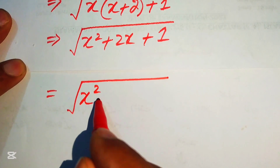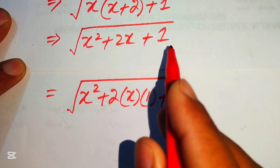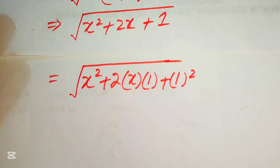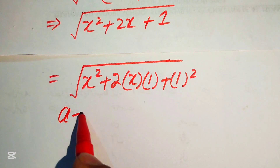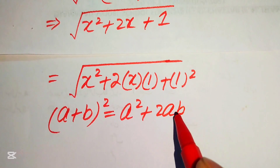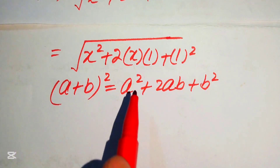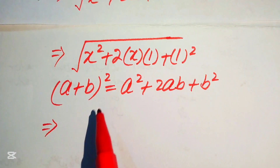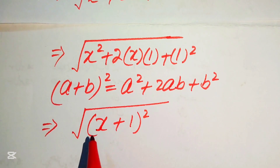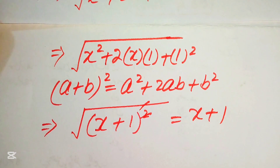We apply the algebraic identity (a + b)² = a² + 2ab + b². We recognize that x² + 2x + 1 equals x² + 2(x)(1) + 1², which matches the identity. So the expression equals (x + 1)². Taking the square root gives x + 1.